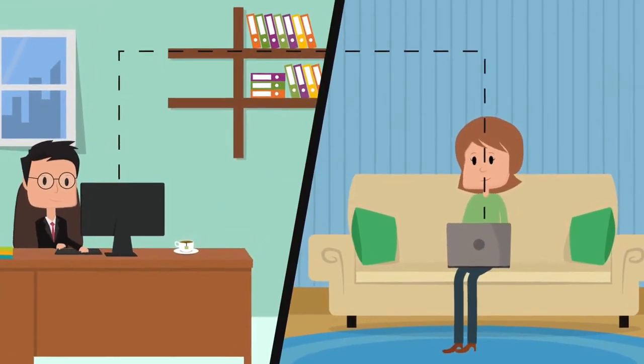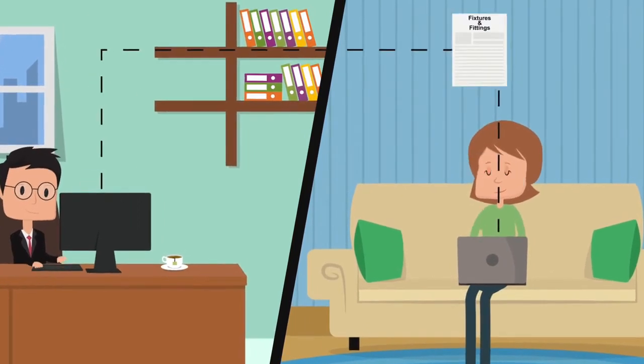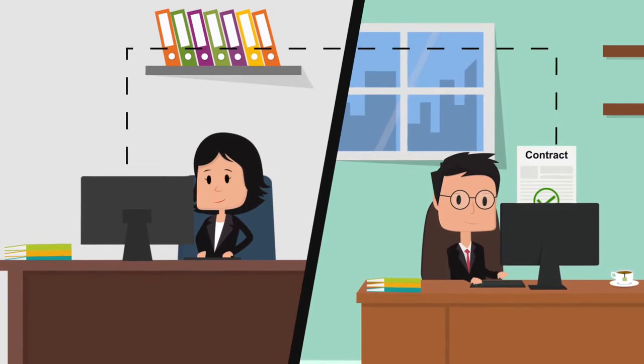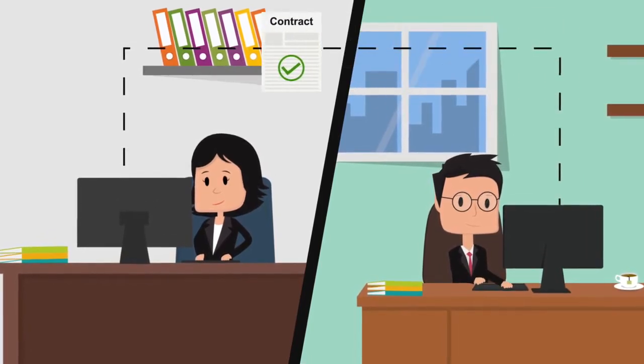The seller's conveyancer uses the monies on account to obtain a copy of the property title and prepares a contract pack. Conveyancing association conveyancers aim to do this within a few days of receiving notification of the sale.